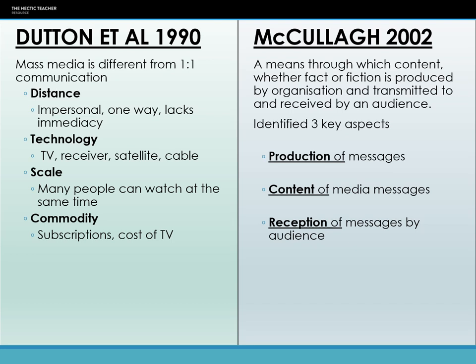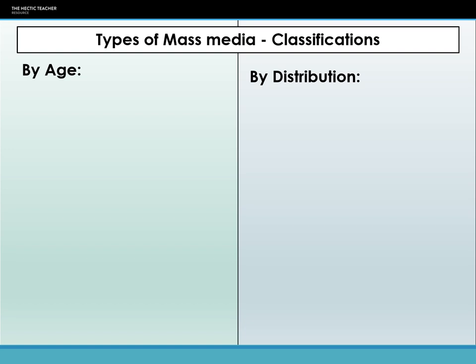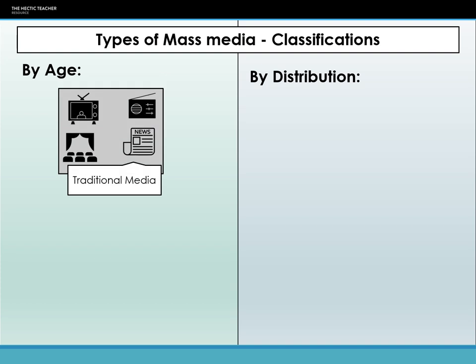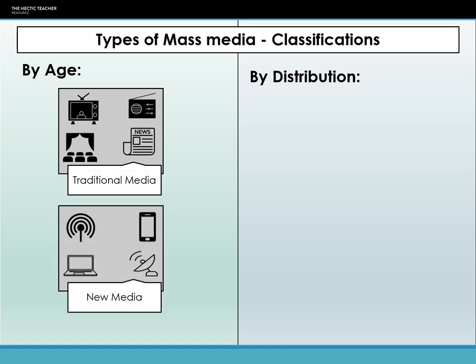So what are forms of media? There are lots of different ways media can be classified. The first is through age — you have your traditional media such as theatre, television, radio, and newspapers, and you have new media, which is more digital: internet, streaming services, mobile phones, and satellite technology. Traditional media is more physical and analogue — going to the theatre, cinema, listening to the radio, buying a newspaper or magazine. Whereas new media is more instantaneous: downloading a book onto a Kindle, streaming through your computer or TV. New media is more digitised compared to traditional media.